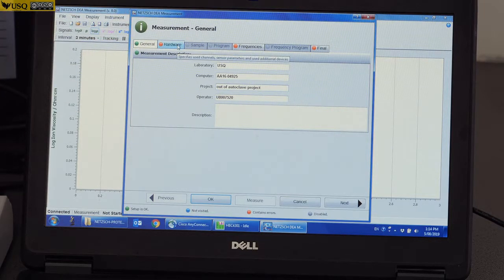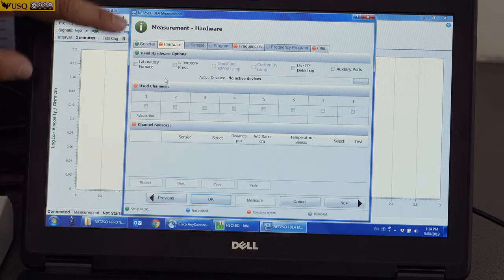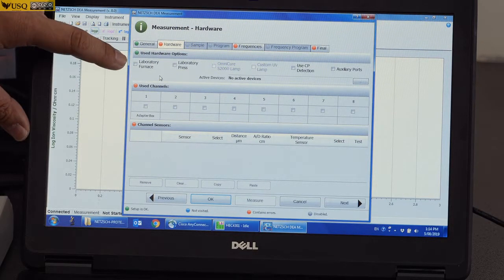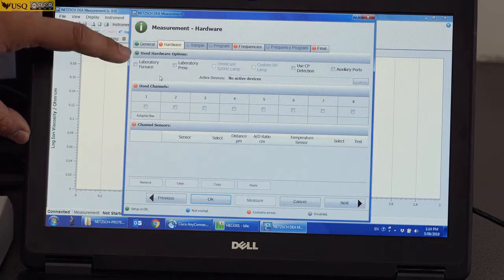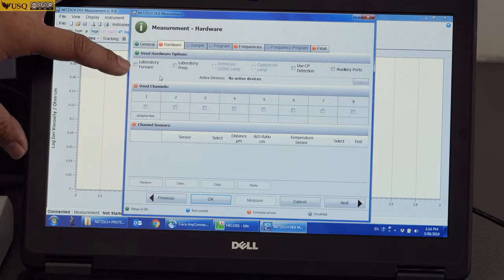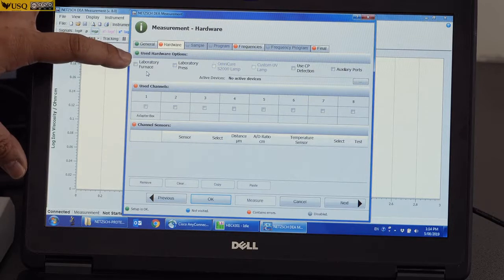Now we can go to the second, which is Hardware. Here, you can see the first that comes out will be your used hardware option. These are available options that can be attached to the instrument. This is green, so this is ready.